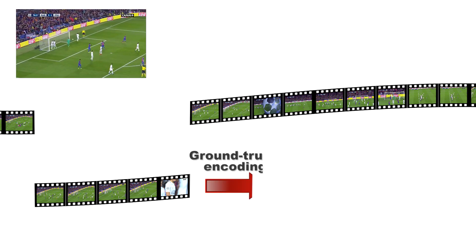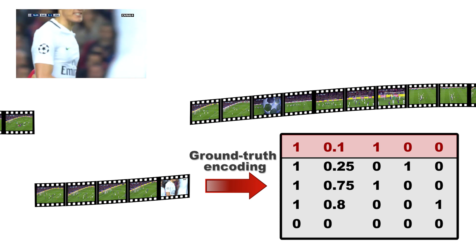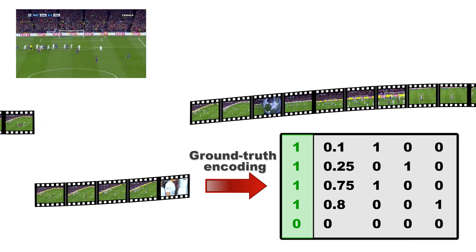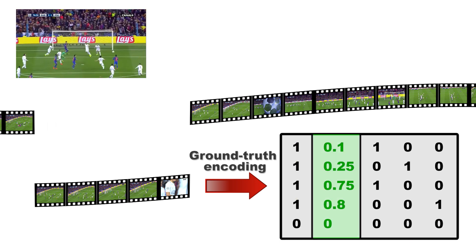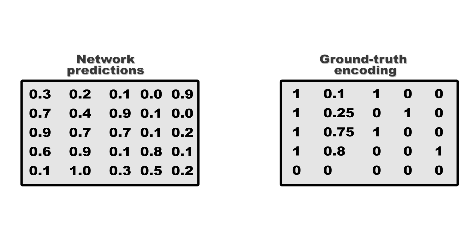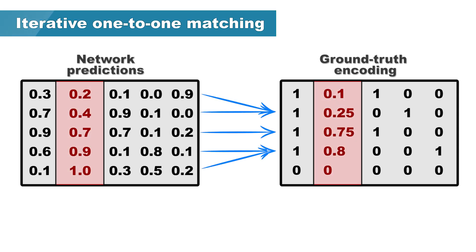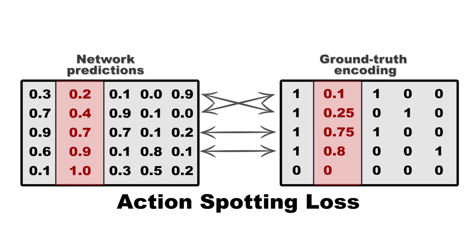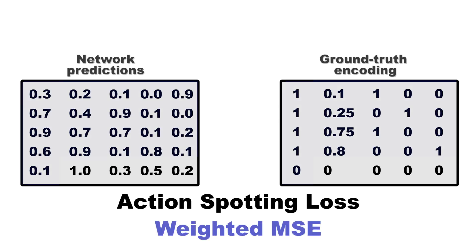We split our videos into chunks. For each chunk, we try to spot the actions it contains, if any. The actions are encoded in a YOLO-like fashion with a set of vectors, one per action, limited to 5 actions per chunk. In the vectors, we encode the presence or absence of actions, their locations within the chunk, and the class of the actions. We ask our network to output 5 action vectors per chunk. We leverage an iterative one-to-one matching to pair each prediction with a ground truth vector based on which has the closest location in the chunk. The action spotting loss between predictions and ground truth vectors is then computed as a weighted sum of squared errors.